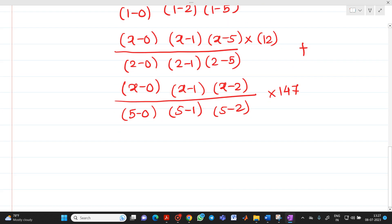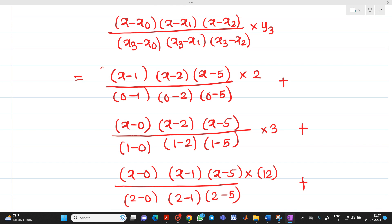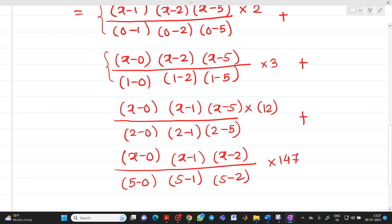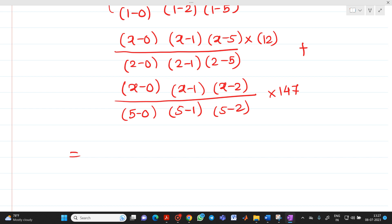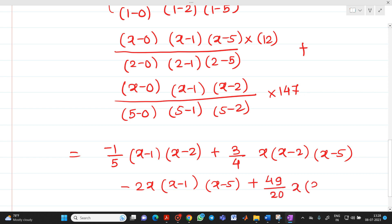Now, term by term, we have to do the calculation. So first, we will do calculation for this step, after that this step. So let me write the equations. Directly we will get minus 1 by 5, x minus 1, x minus 2, plus 3 by 4, x into x minus 2, x minus 5, minus 2x into x minus 1, x minus 5, plus 49 by 20 into bracket x, x minus 1, x minus 2.